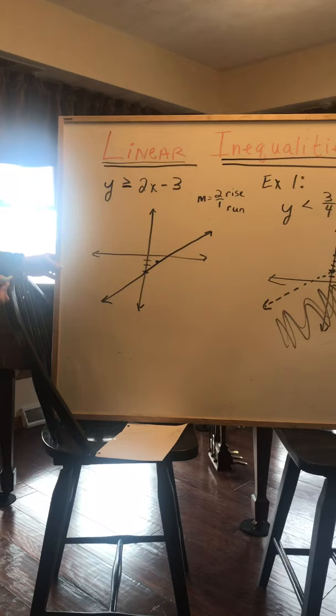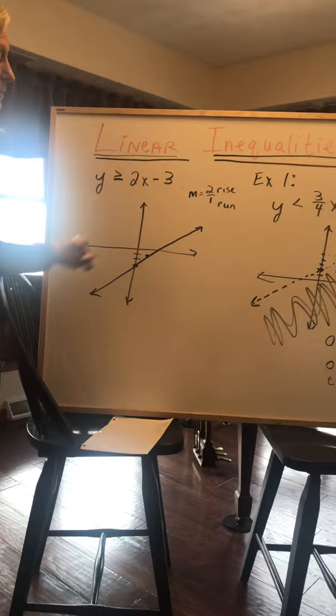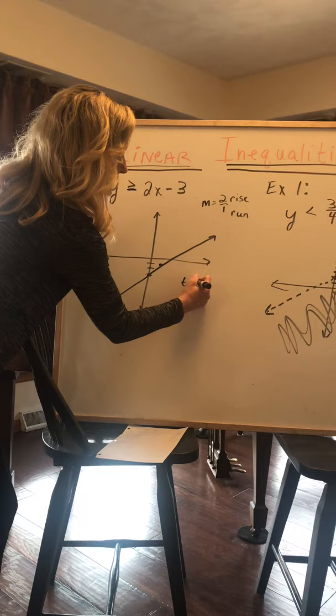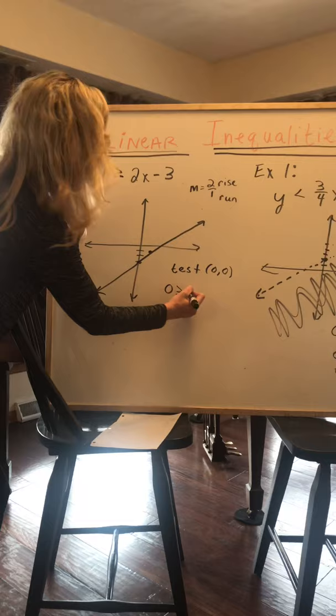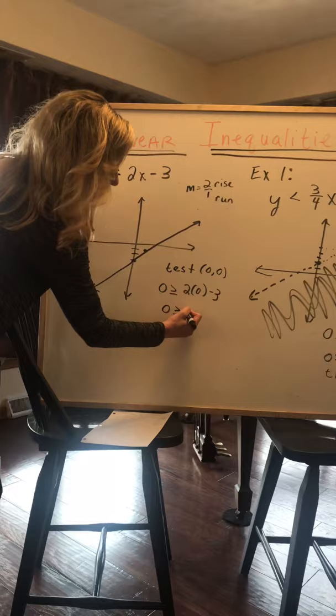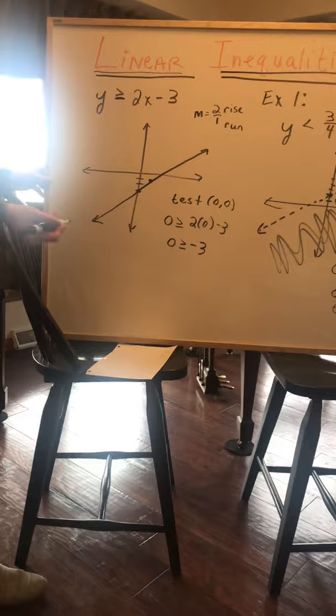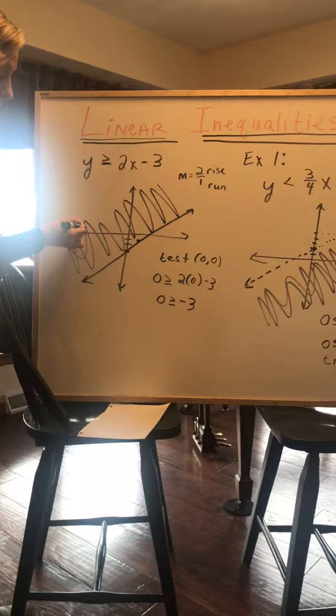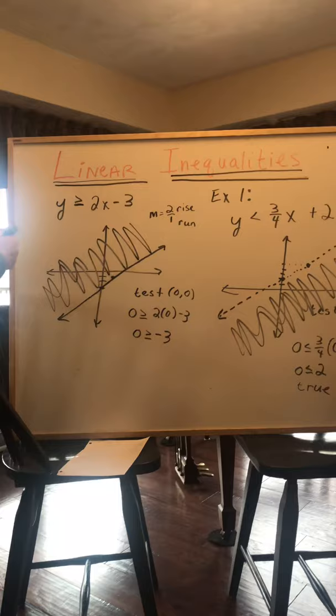And you might already guess where you were going to shade, but let's just test a point. A point that does not lie on this line that's easy to see is 0, 0. So let's test 0, 0. That means I'm going to let y be 0 and I'm going to let x be 0. 0 is greater than or equal to 0 times anything is 0, 0 minus 3 is negative 3. Is 0 greater than negative 3? Yes, it's true.